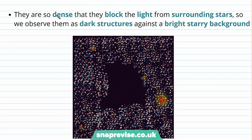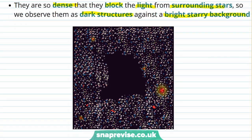Nebulae are so dense that they block the light from surrounding stars, so we observe them as dark structures against a bright starry background. For example, in this image we see lots and lots of stars and a dark shape at the centre, which is a nebula cloud.